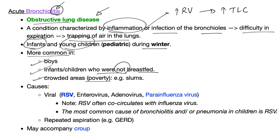Crowded areas or poverty are additional risk factors. The exam question can describe a two-year-old boy living in overcrowded slums presenting with cough, fever, sneezing, clear rhinorrhea, decreased appetite, wheezing, and grunting. What's the diagnosis? Acute bronchiolitis. What's the most common cause? RSV — respiratory syncytial virus.